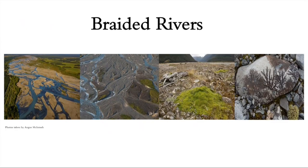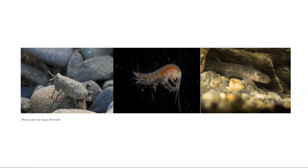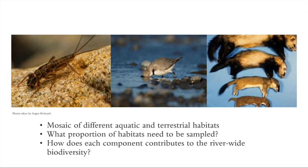Braided rivers are a very dynamic system with a lot of connected terrestrial and aquatic ecosystems that are hotspots of biodiversity. They contain threatened robust grasshoppers, difficult-to-sample groundwater crustaceans, patchy and cryptic native galaxiid fish, and aquatic insects like mayflies which further support native bird populations like the wrybill. They are also affected by invaders. However, we don't quite understand what proportion of these habitats we need to sample to get an accurate representation of biodiversity, nor how each terrestrial and aquatic component contributes to the overall braided river biodiversity.